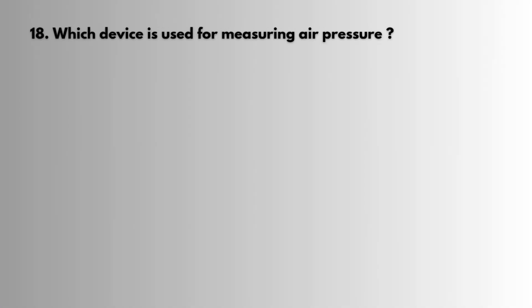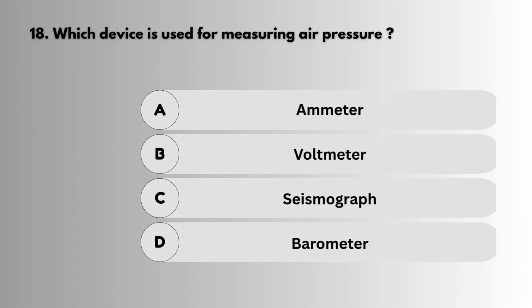Question 18: Which device is used for measuring air pressure? Answer: Barometer.